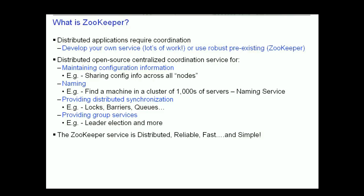The ZooKeeper service can be used to help you tackle many of the common challenges distributed applications face. ZooKeeper can be used to maintain configuration information — for example, you can store configuration data in ZooKeeper and share that data across all nodes in your distributed setup. ZooKeeper can be used for naming, allowing one node to find a specific machine in a cluster of thousands of servers. It can also solve the problem of distributed synchronization, providing the building blocks for locks, barriers, and queues, as well as group services such as leader election. ZooKeeper provides the building blocks for all of these scenarios and is distributed, reliable, and fast, while still being relatively simple to work with.